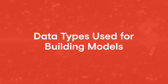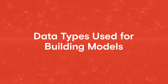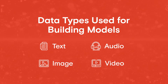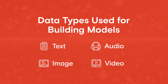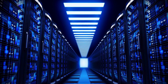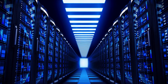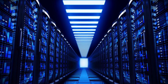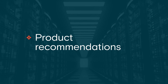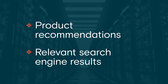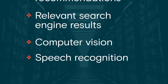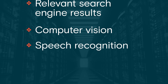The primary data types used for building models include text, audio, image, and video annotation. When working with high-quality data annotation, companies can build and enhance AI applications such as product recommendations, search engine results, computer vision, speech recognition, and more.